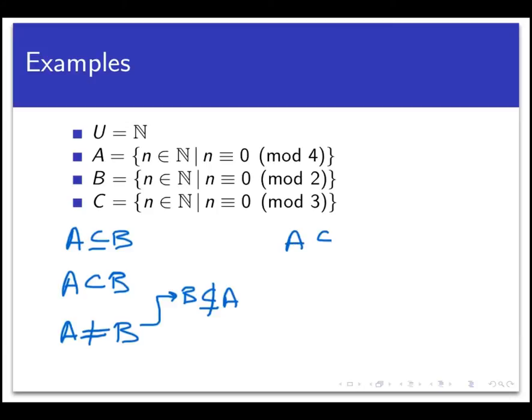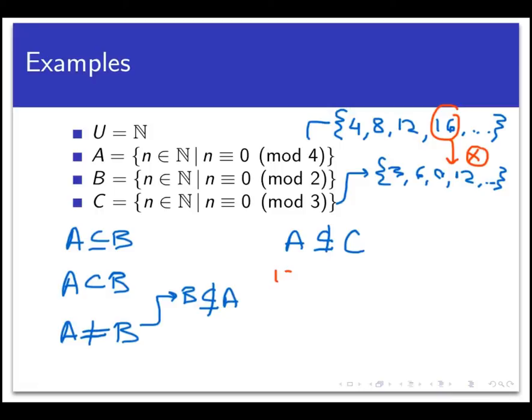We could say that A is not a subset of C. Why is that? If A were a subset of C then every element of A would belong to C. A is the set of 0 mod 4 natural numbers: 4, 8, 12, and so on. And C is the set of natural numbers that are 0 mod 3: 3, 6, 9, 12. Occasionally you get an overlap but there are numbers in A, say 16, that you will not find in C. Because there is something in A that does not belong to C, those two are not subsets of each other.